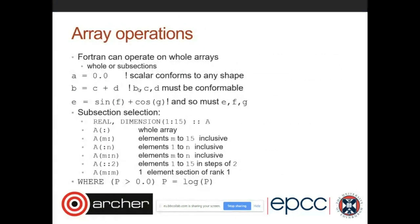Fortran 90 also introduces array operations, allowing you to operate on whole arrays or subsets with a single statement. For example, `b = c + d` — as long as b, c, and d are the same size and shape — will update all elements of b with the sum of the corresponding elements of c and d. This is a cleaner way of writing what would otherwise require an explicit loop over all elements.